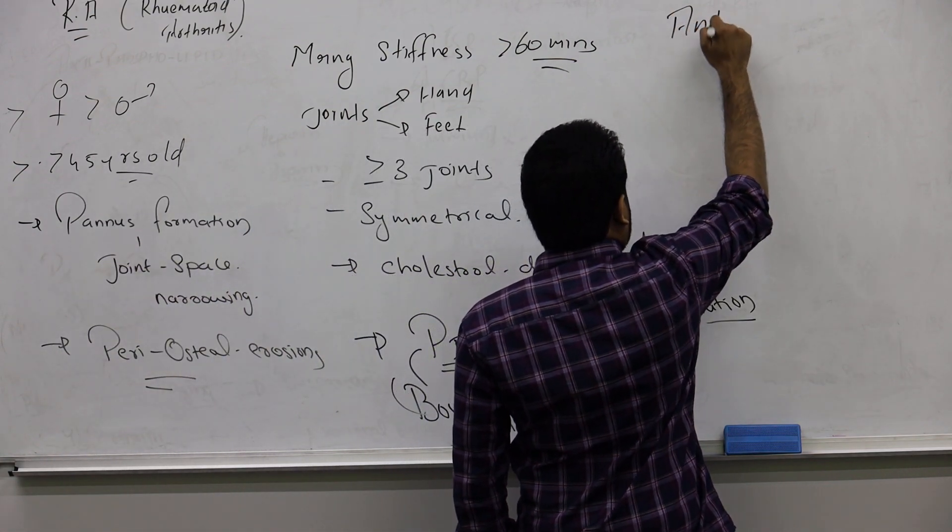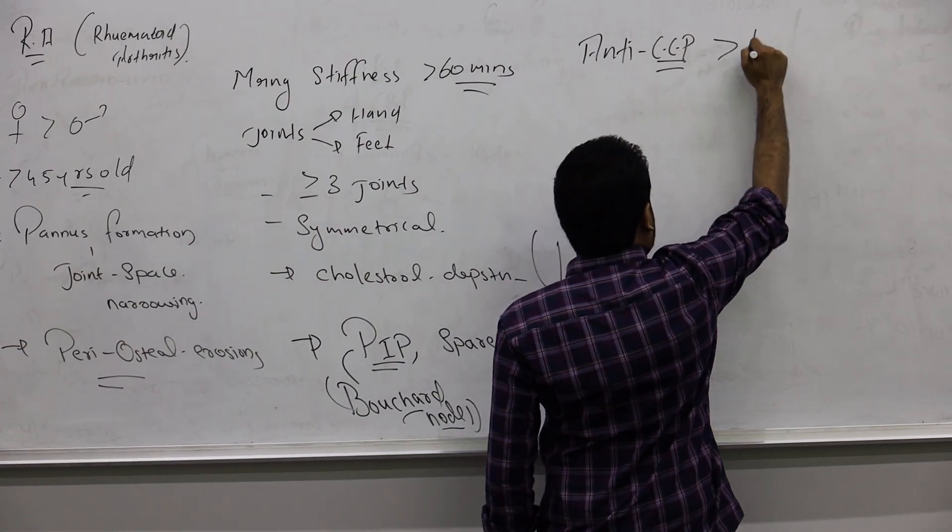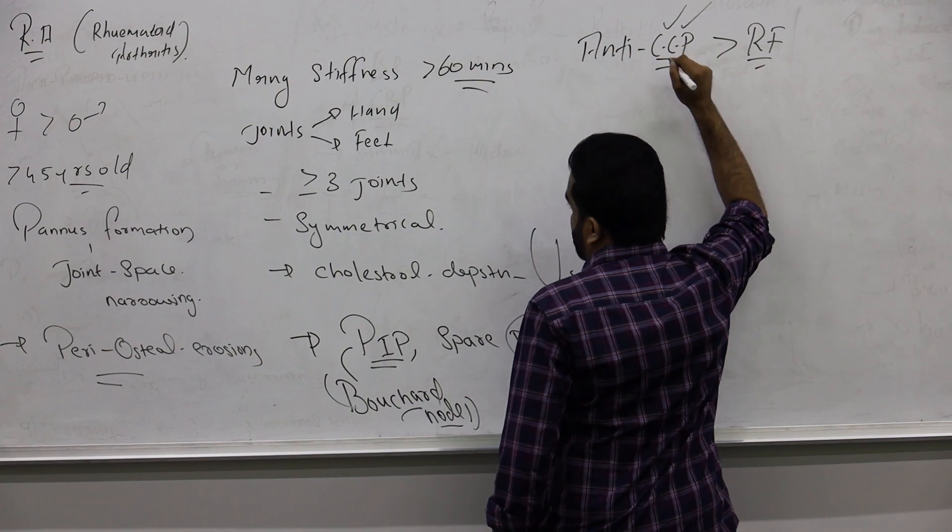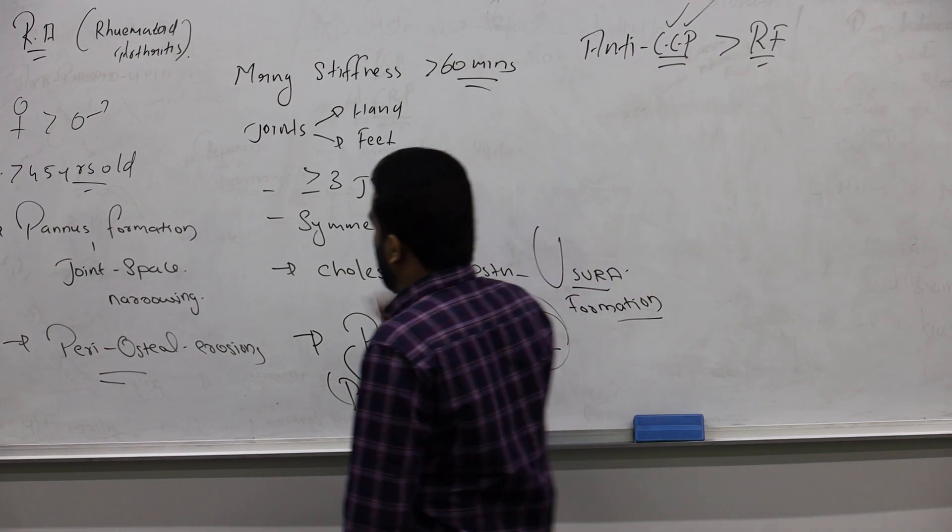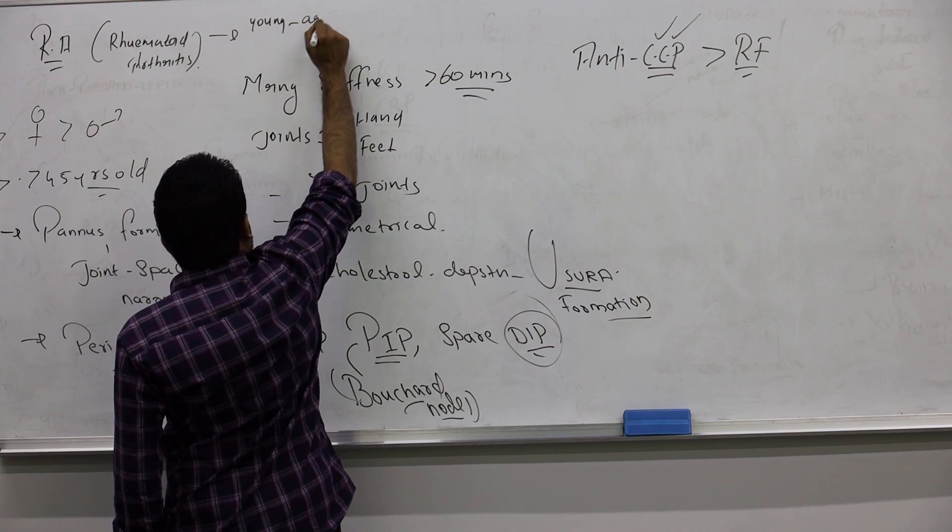Heberden nodes for DIP, that's mainly for osteoarthritis. Then you will see the antibody in the blood, anti-CCP. It will be more better than rheumatoid factor. Always remember which one you will choose: anti-CCP.